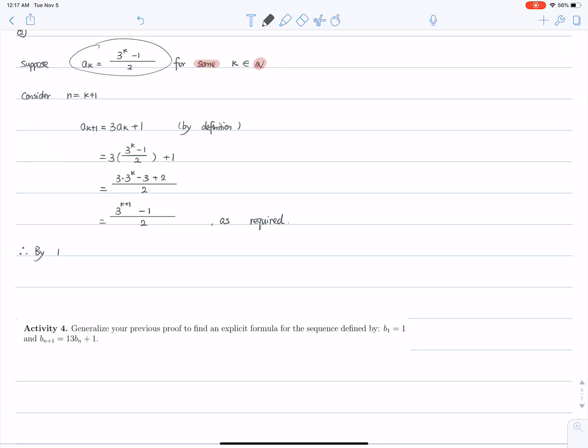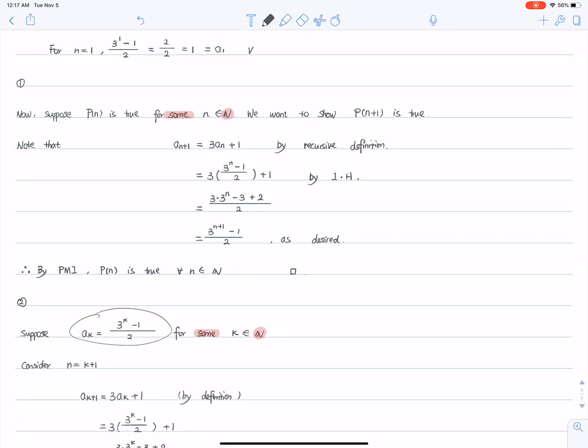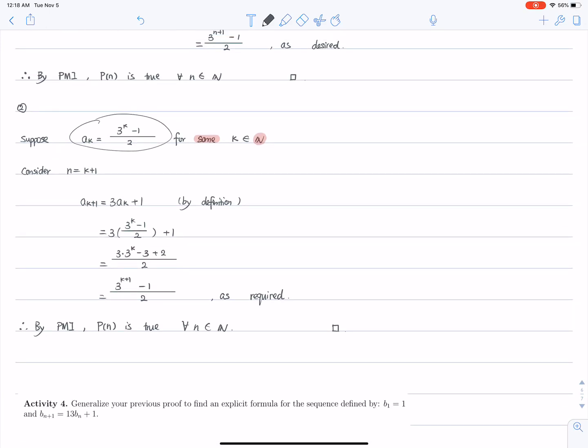Therefore, by PMI, p of n is true for all n in natural number. And we are done. Again, the difference is that, suppose p of n is true and prove that p of n plus 1 is true. What I did is I introduced another variable k. And I suppose p of k is true. And now I try to show that p of k plus 1, which is p of n is true. But as you can see, they are literally the same thing. So pick whatever you want and continue with that.